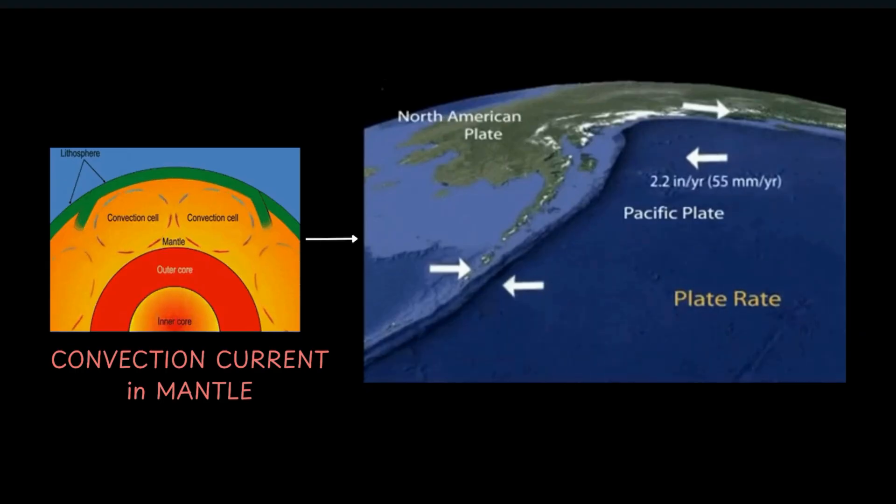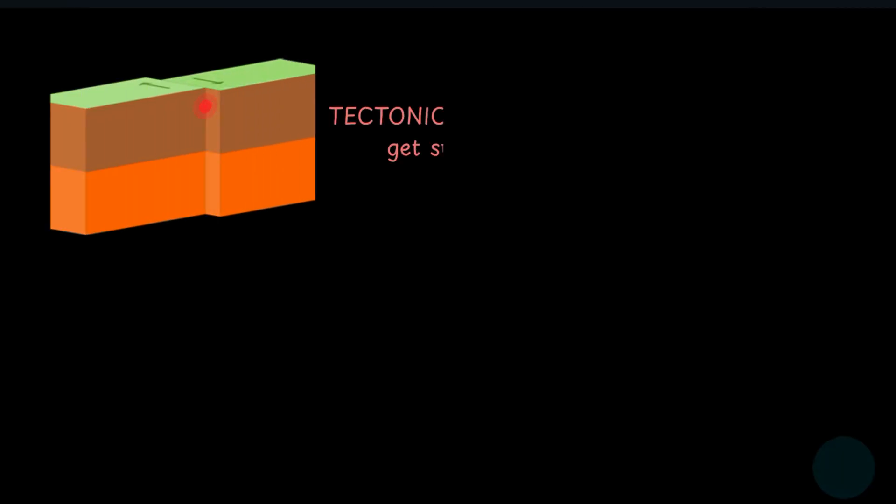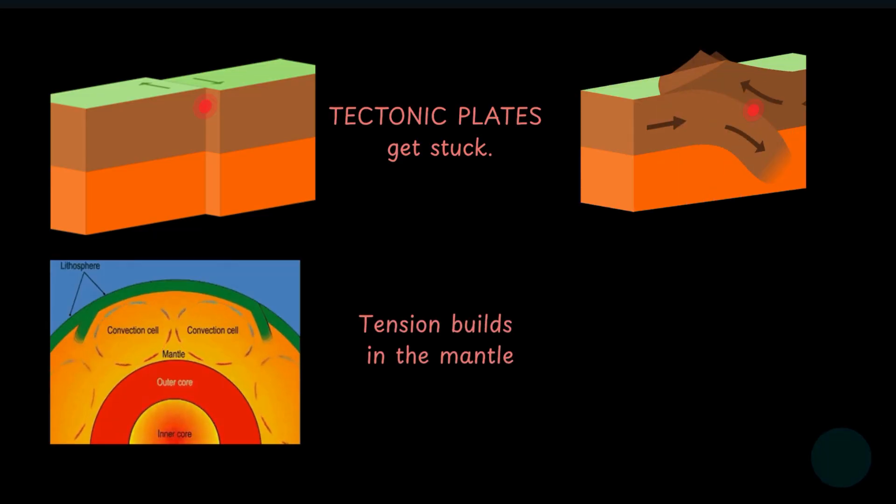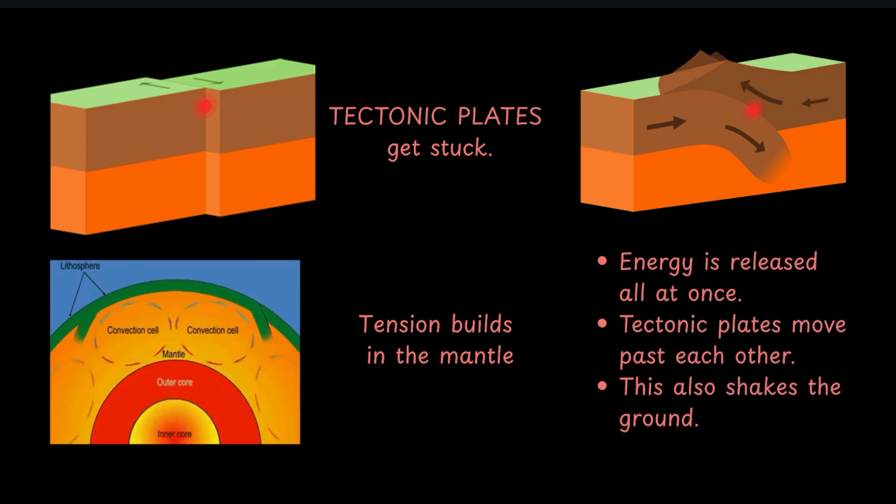However, at times, these plates can get stuck together and can't move. But the convection energy still continues to build up. And eventually, this energy is released all at once in a sudden jolt. And while this energy helps the tectonic plates finally move past each other, it also shakes the ground, causing an earthquake.